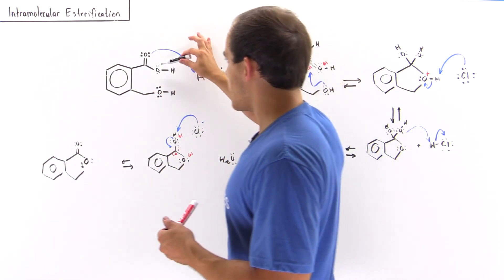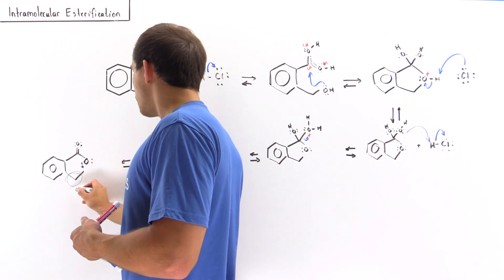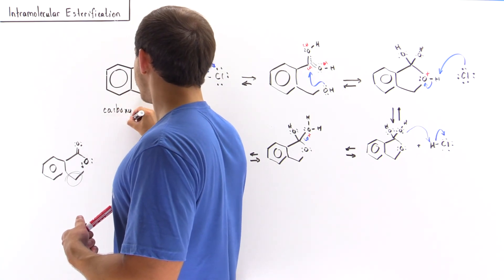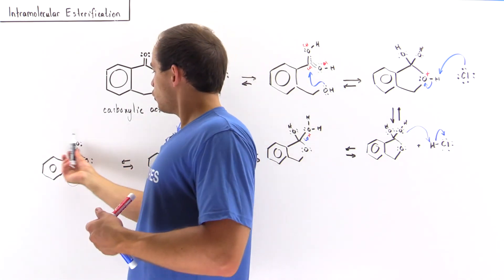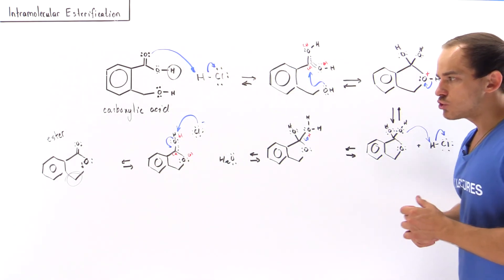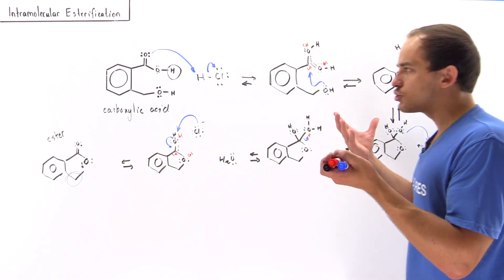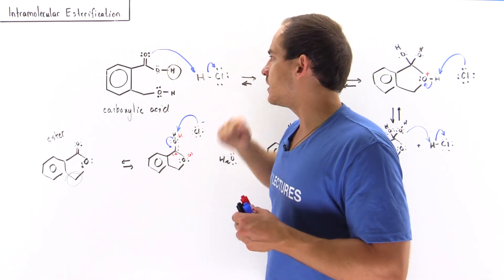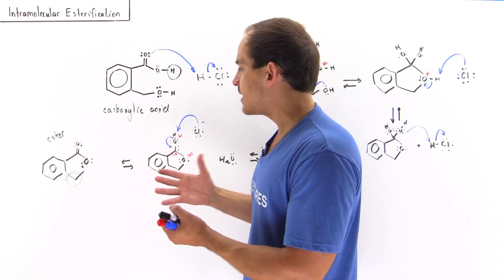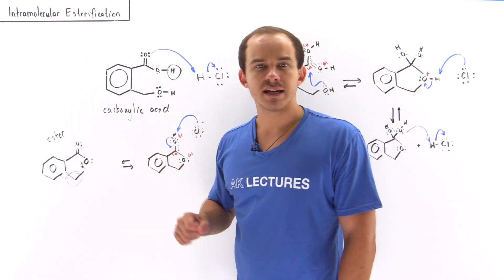Comparing the starting material to the product: in the starting material, we have an H atom attached to oxygen; in the product, we have a hydrocarbon R group attached to that oxygen. So we go from a carboxylic acid to an ester in an intramolecular Fischer esterification reaction. This shows that esterification reactions can occur on a single molecule, as long as it contains both a carboxylic acid group and an alcohol group, and the resulting ring is large enough to be stable — in this case, a five-membered ring.